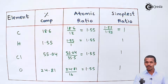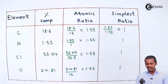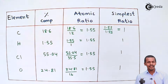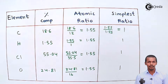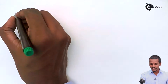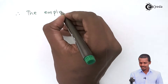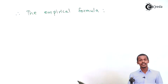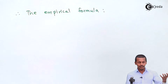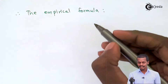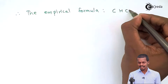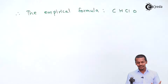From the simplest ratio, we can determine the number of each atom present in the organic compound. Carbon, hydrogen, chlorine, and oxygen are present in a ratio of 1:1:1:1. When written as a formula, this is the empirical formula. Therefore, the empirical formula is CHClO.